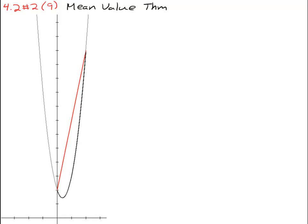Here is an example of the mean value theorem in use. With this question they gave us the equation f of x equals 4x squared minus 3x plus 2 on the interval from 0 to 2.